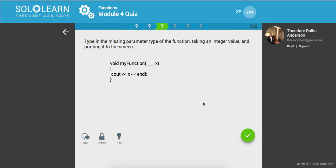Type in the missing parameter type of the function taking an integer value and printing it to the screen. Okay, I'm just going to take an integer, so we got that, you know, a little inference from up here.